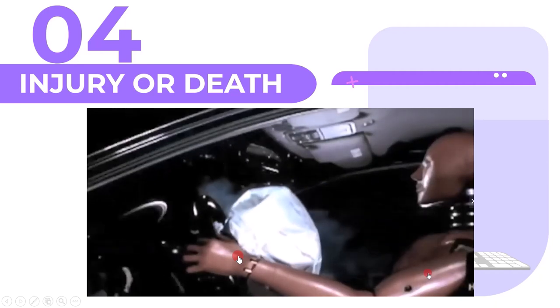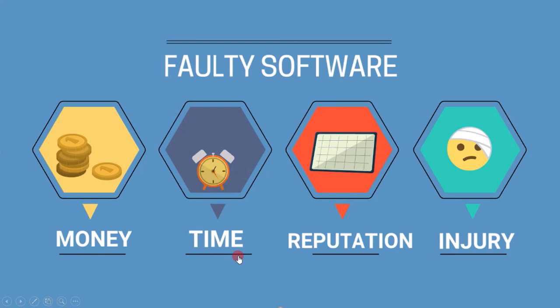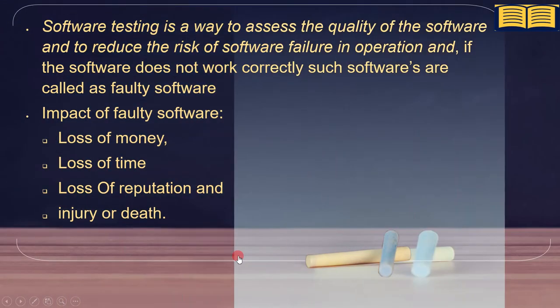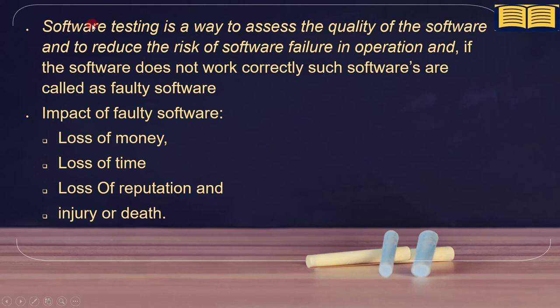With this, all the impacts of faulty software are covered: loss of money, loss of time, loss of reputation, and injury or death. To summarize: software testing is a way to assess the quality of the software and to reduce the risk of software failure in operation. Software that does not work correctly is called faulty software, and its impacts include loss of money, loss of time, loss of reputation, and injury or death.